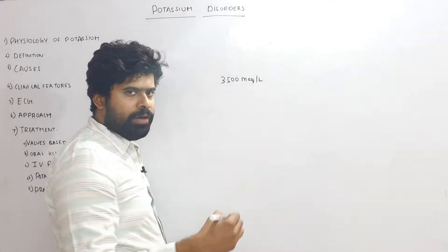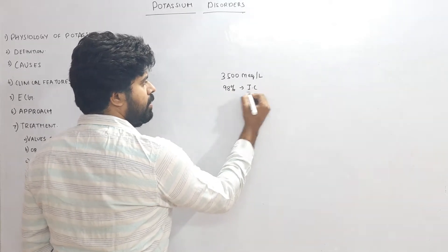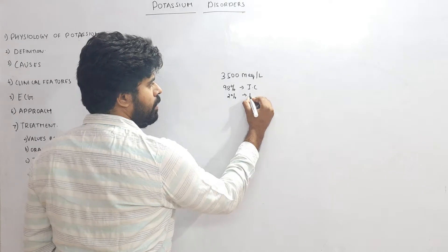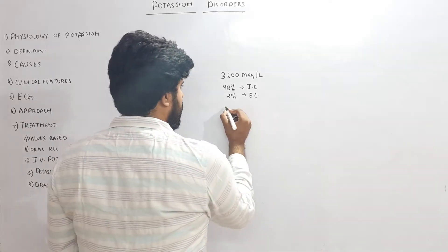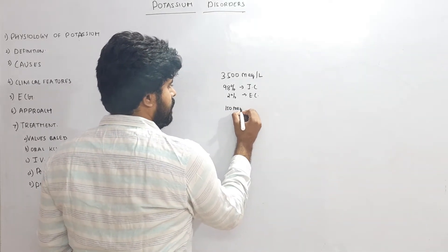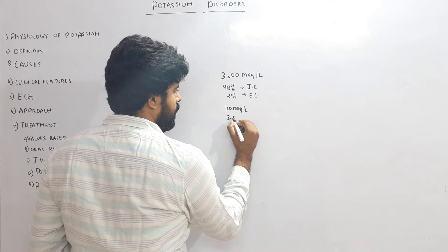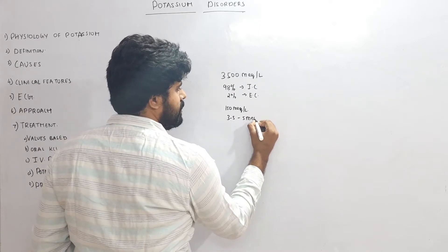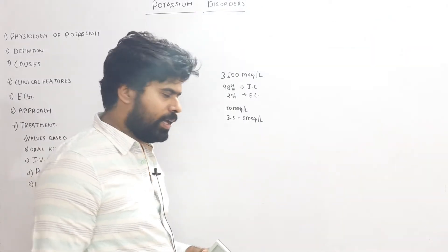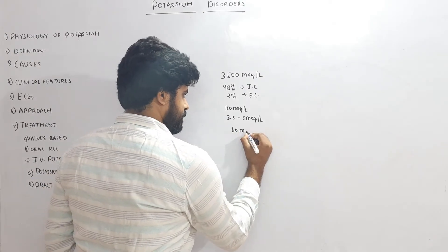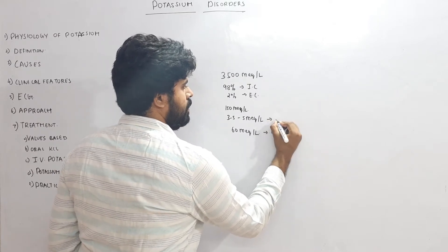Of the total body stores, 98% of the potassium is intracellular and 2% is extracellular. The usual intracellular potassium value is around 150 milliequivalents per liter. Serum potassium values are normally around 3.5 to 5 milliequivalents per liter. The normal dietary requirement of potassium is around 60 milliequivalents per day.